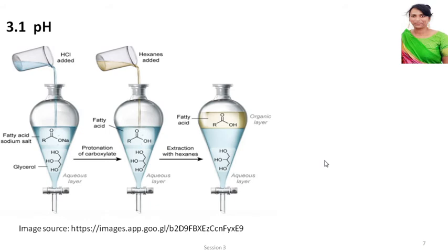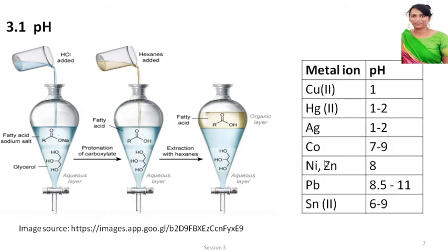Similarly, you can bring about extraction of various metal ions like copper, mercury, silver, cobalt, nickel, zinc, lead, or tin by varying the pH. Different pH ranges are given for selectively extracting each metal in the form of its ions. This is how pH plays an important role in solvent extraction.